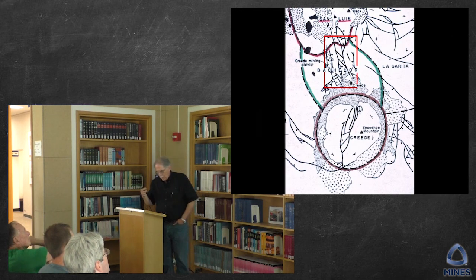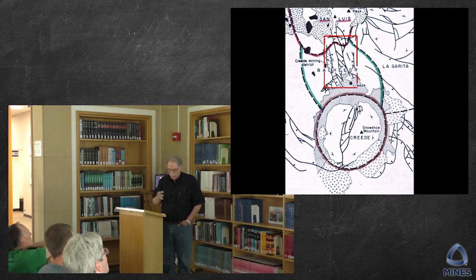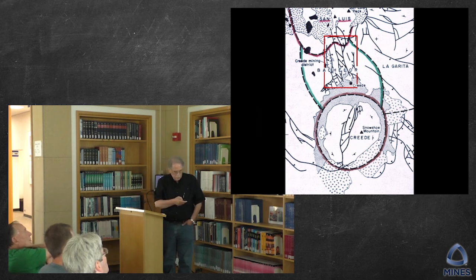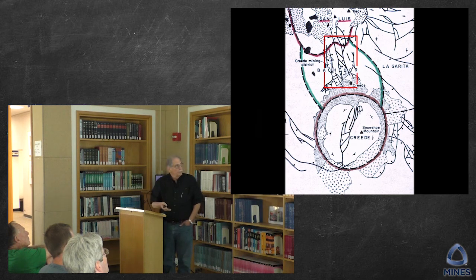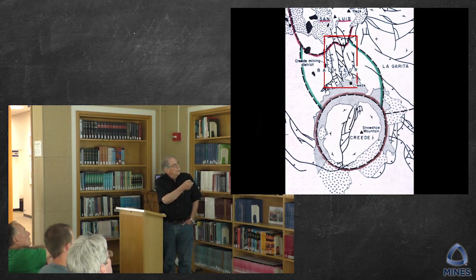I'm not going to be focusing today on geology, but I can't get away from pointing out a couple of small things. The Creed Mining District sits in this area outlined in red. Those black lines are faults, and those have been mineralized — so now we call them veins. And the green marks the boundaries of the Bachelor Caldera.